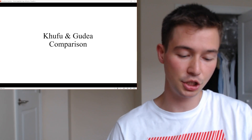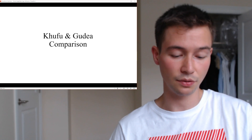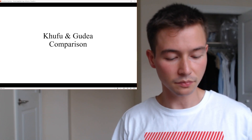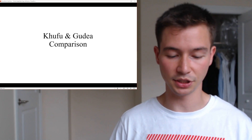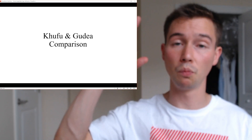Starting with their historical context: Khufu, also known as Cheops, reigned during the fourth dynasty of the Old Kingdom around 2,589 to 2,566 BCE — the peak of ancient Egyptian civilization, known for its monumental architectural projects. Gudea governed the independent city-state of Lagash in ancient Mesopotamia from approximately 2,144 to 2,124 BCE, after the Lagash Empire's height. Khufu reigned at the peak of the Old Egyptian Empire, whereas Gudea was a shining light near the latter period of the Lagash Empire.